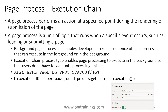In today's session we focus on using the execution chain to run a process in a background manner. The need is to invoke a background process that takes some time without making the user wait - just run it in the background and let it finish. For this, we set a property called 'run in background' on the execution chain. There's a view called APEX_APPL_PAGE_BG_PROCESS_STATUS which shows running background processes and their state, and a function APEX_BACKGROUND_PROCESS.GET_CURRENT_EXECUTION_ID which provides the execution ID of the current invocation, allowing you to monitor the status.